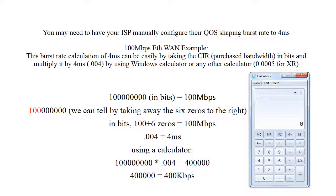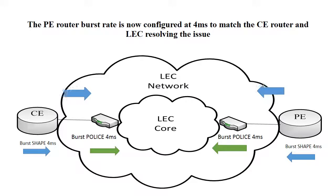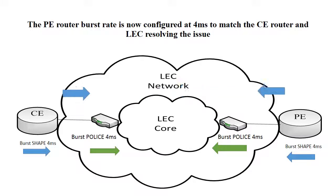This calculation can be easily done by taking the bandwidth in bits — however many megs you have — adding six zeros to the right of it and multiplying by 0.004. When the QoS burst rate is matching on the CE, PE, and the LEC equipment, you should no longer have drops within the LEC core network.